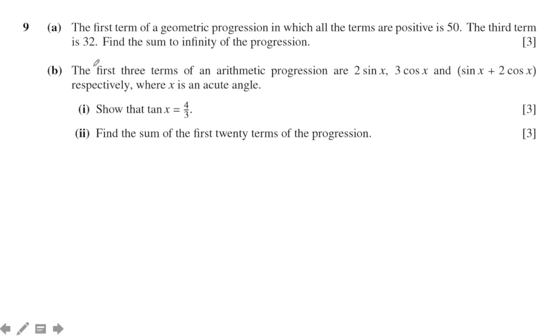The first three terms of the arithmetic progression are 2 sin x, 3 cos x, and sin x plus 2 cos x respectively, where x is an acute angle. Here we have x as an acute angle, so show that tan x equals 4/3. You know about the arithmetic sequence—the order of the terms is u₁, u₂, and u₃. So that's why you can write that the difference between u₂ and u₁ will be equal to u₃ minus u₂.